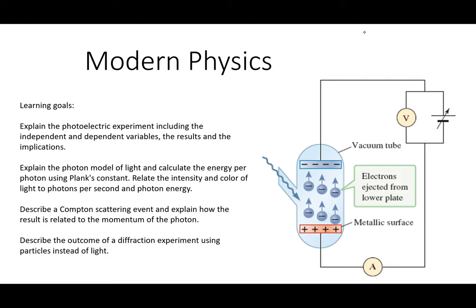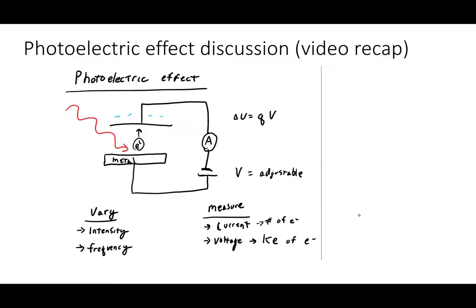The experiment that kicks this off is the photoelectric experiment. I discussed it in detail in the pre-topic video, so I'll start by summarizing it. The photoelectric effect is the idea that if I shine light on a metal, I can liberate electrons from that material. If I catch those electrons, I can count up the current to measure how many electrons I'm freeing, and I can adjust a voltage to see how much kinetic energy those electrons have when they leave.